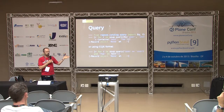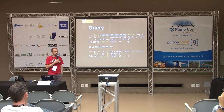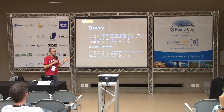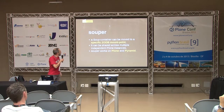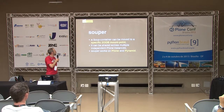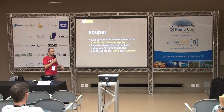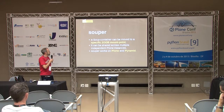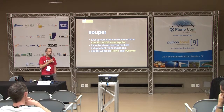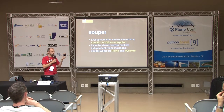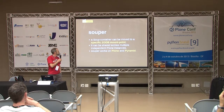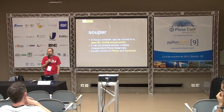To do that, you need to define some indexes — different types. It's quite similar to the Plone catalog: you have a text index, a field index, and so on. A Soup container can be moved into a specific ZODB mount point — there is a tool for that, really handy. It can be shared across multiple independent Plone instances — the same Soup container can be put into an FS file and shared if you need it. And it works on Plone and Pyramid, which is a good point.